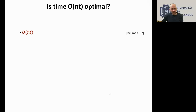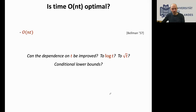We can ask whether this running time is optimal. Can the dependence on t be improved — to log t, polylog t, or even square root t? Here we will see that conditional lower bounds rule out such improvements.